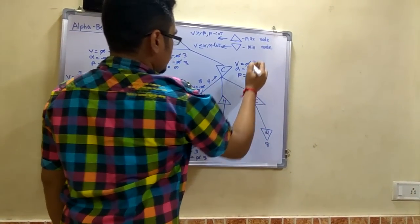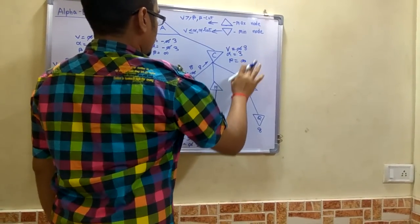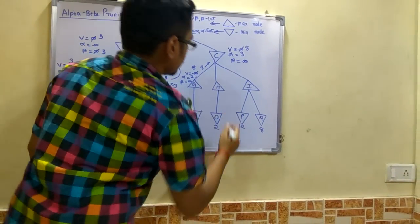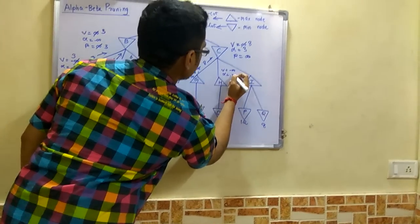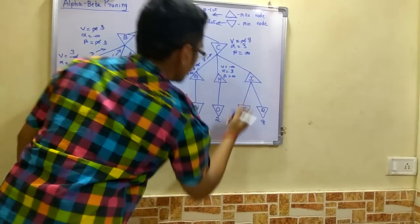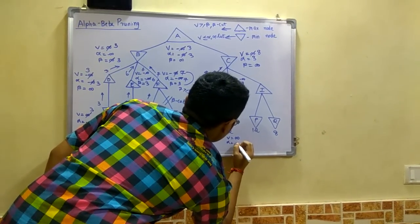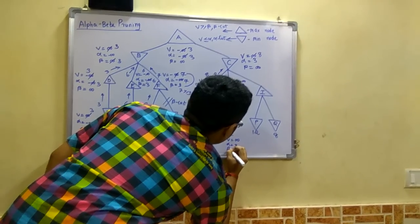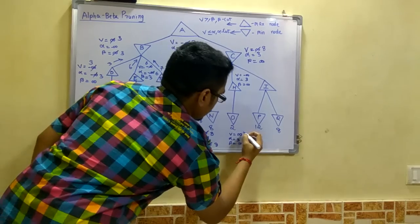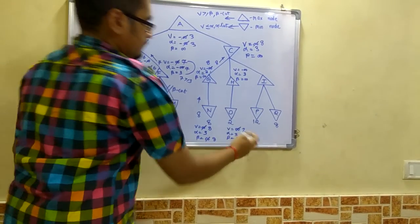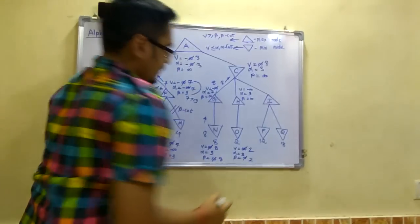The value of C is updated to 8, and the beta value remains the same while alpha stays at 3 — no further changes. Moving down the next branch, V is minus infinity, alpha is 3, and beta is infinity. Going further down, V is infinity, alpha is 3, and beta is infinity. Moving to the next leaf node, V is infinity, alpha is 3, and beta is infinity — we will update it to 2.